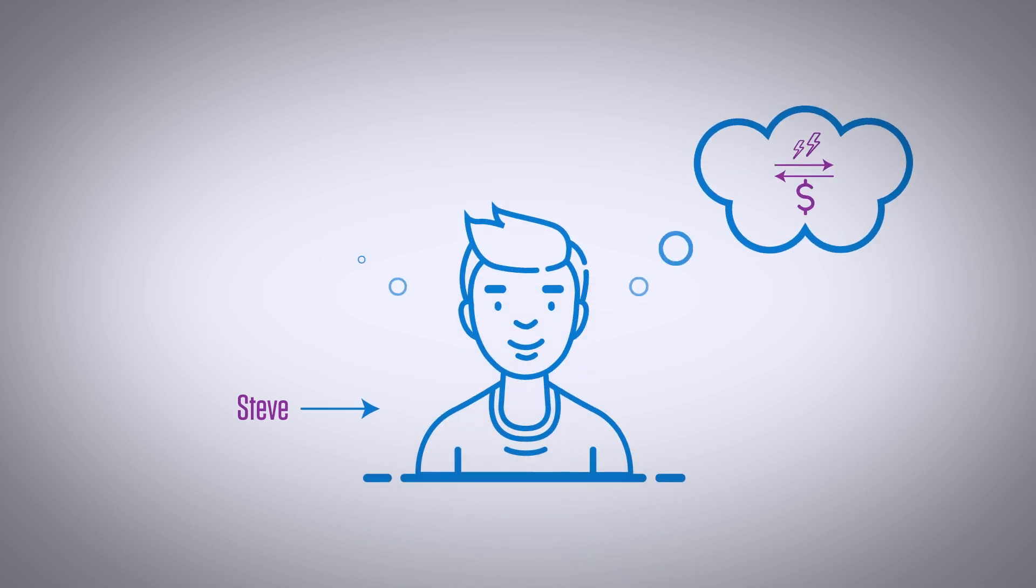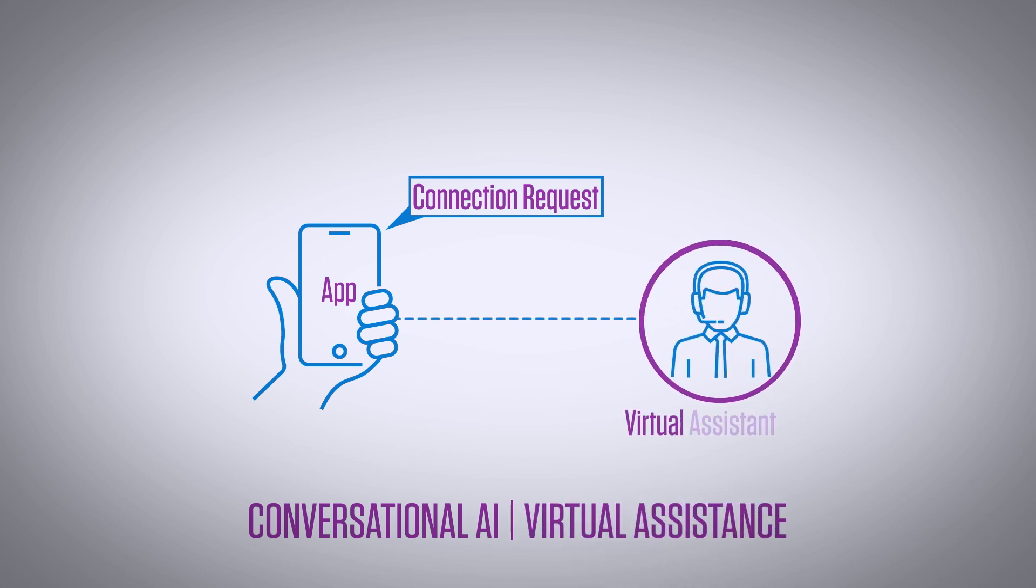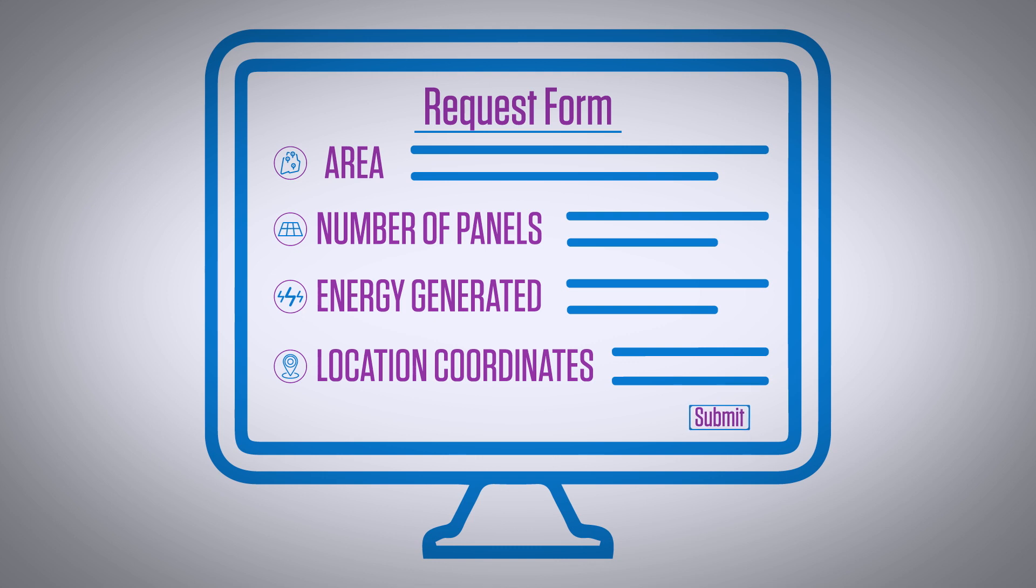Steve wants to set up a distributed energy resource solar plant and sell energy. He opens the utility app for a connection request, is inquired about his requirement by the virtual assistant, and requested to submit the new connection form with specific details.